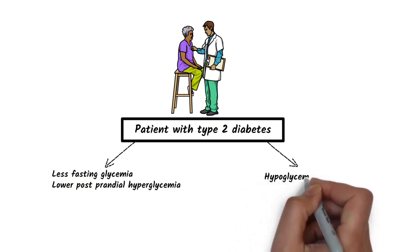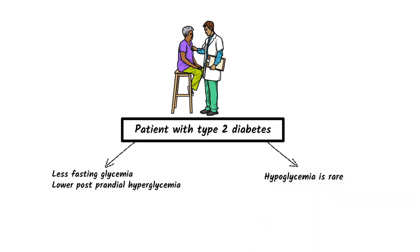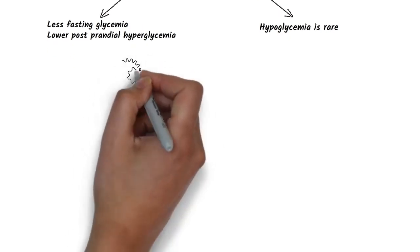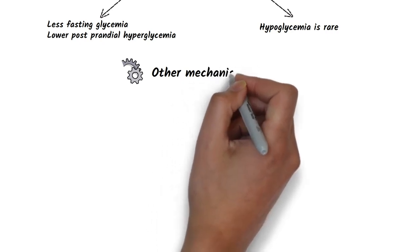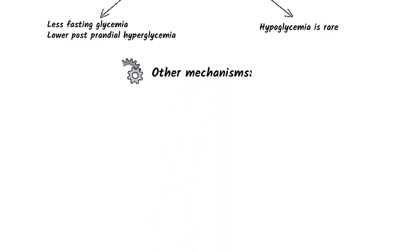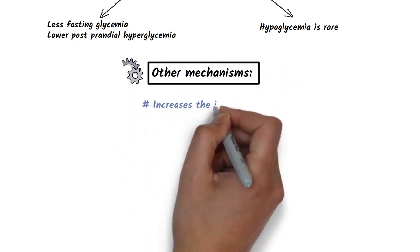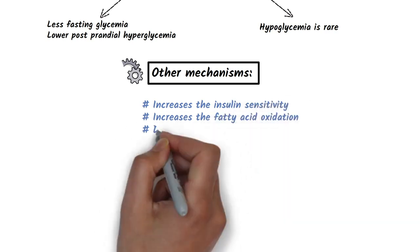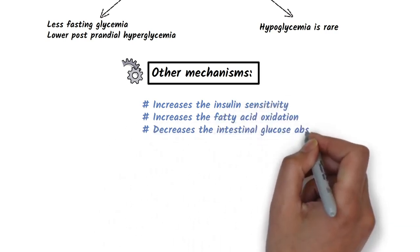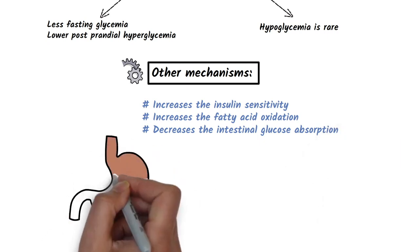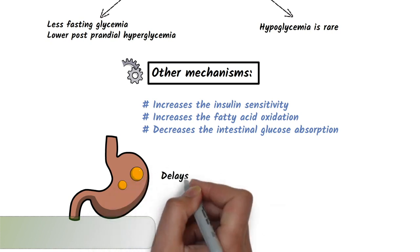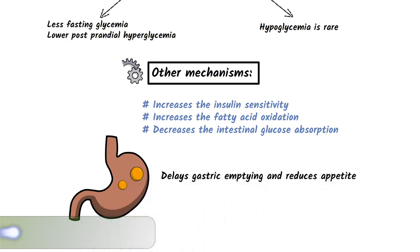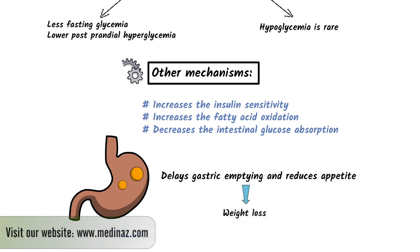Hypoglycemia is rare during metformin therapy. That's why it is more appropriately termed as a euglycemic agent. There are other mechanisms also: it increases insulin sensitivity, it can increase fatty acid oxidation, and it can decrease intestinal glucose absorption. It also delays gastric emptying and reduces appetite, which can cause weight loss in some cases.